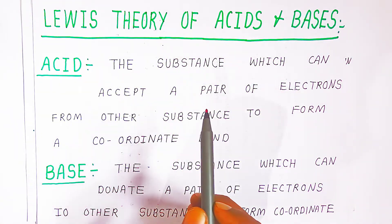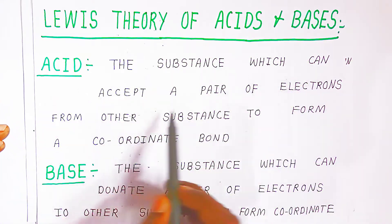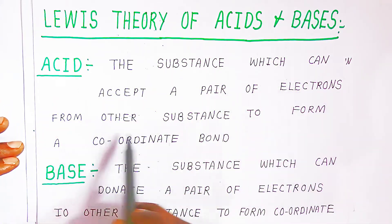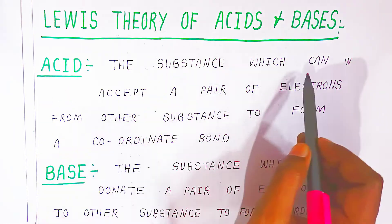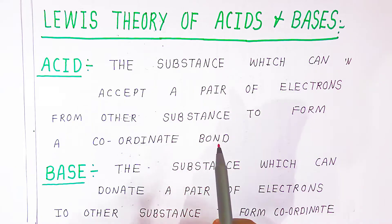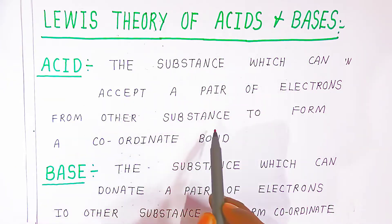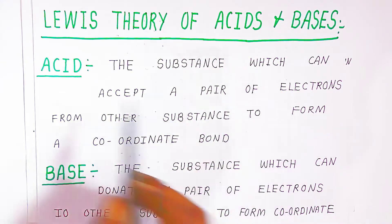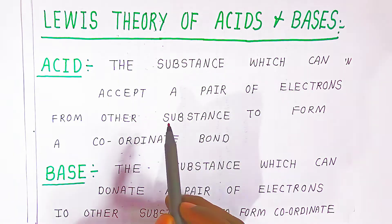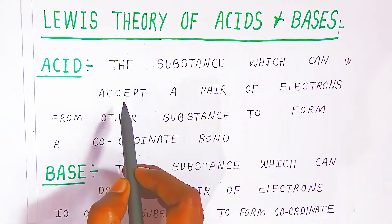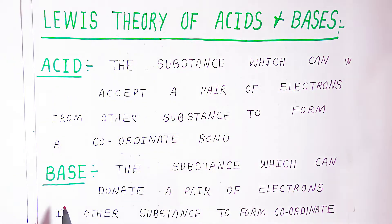According to Lewis, which substance do we call an acid? A substance which can accept a pair of electrons from another substance to form a coordinate bond is called an acid. In one sentence, we can say electron acceptors are called acids.